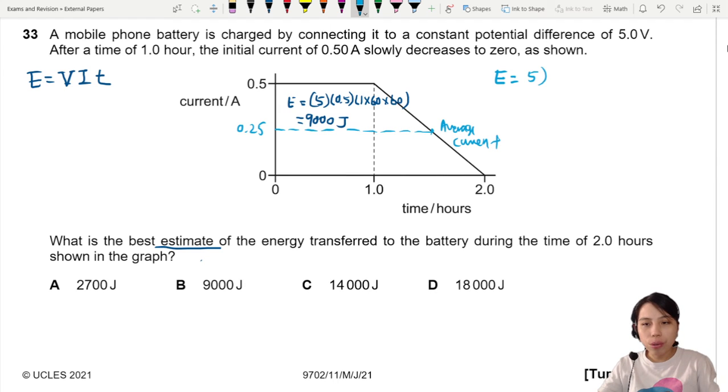So this will be 5 volts VI. Current, we use average, 0.25, and time. This time frame is also one hour. So one hour, 60 minutes, 60 seconds. We convert to seconds. This will give us energy of 4,500 joules.